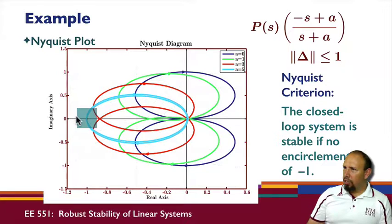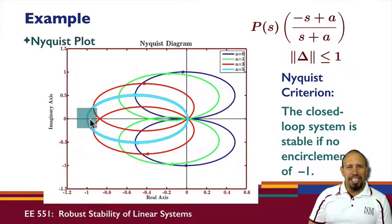We can zoom in on the minus one point and find indeed that we can find a value of a for which we get an encirclement. So this is an example that illustrates what's going on. Hopefully it's helpful.